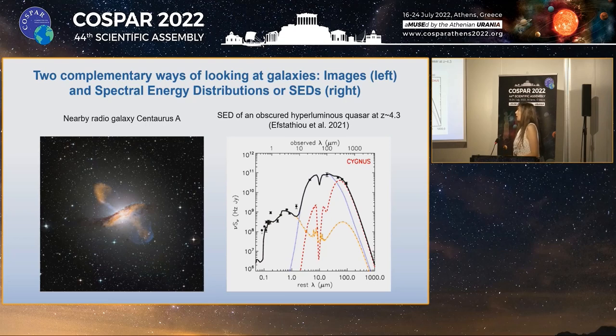An example of this case is on the right, where we have an SED plot of an obscured hyperluminous quasar at a redshift of 4.3, discovered by Eustatio et al. last year.